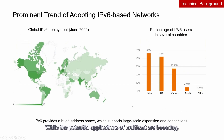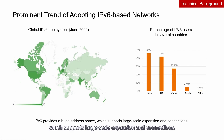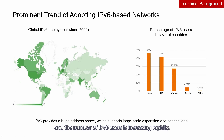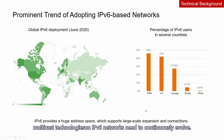While the potential applications of multicast are booming, the trend of adopting IPv6-based networks becomes more and more prominent. IPv6 provides a huge address space which supports large-scale expansion and connections. Worldwide, many countries are developing IPv6 networks, and the number of IPv6 users is increasing rapidly. As IPv6 becomes more widely adopted and new service scenarios require higher bandwidth and better user experience, multicast technologies on IPv6 networks need to continuously evolve.